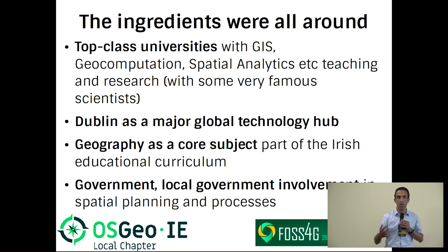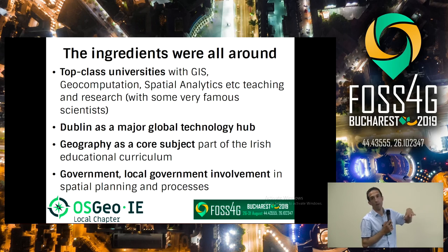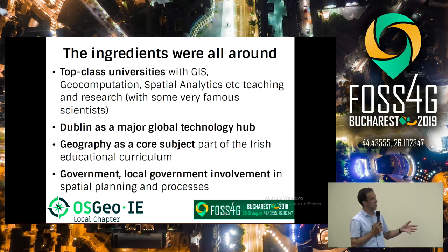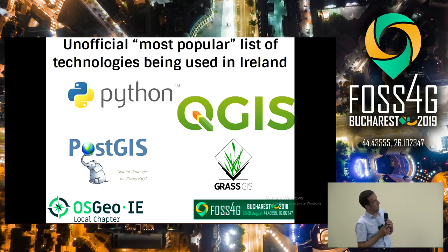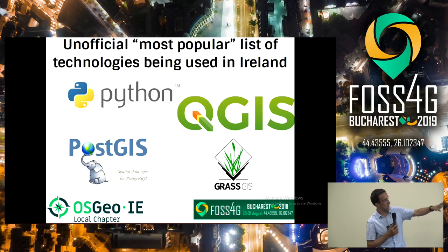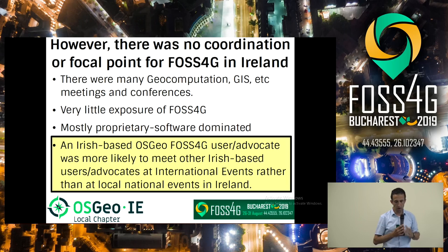The ingredients were all around. We had four major components: top-class universities with huge spatial components in teaching and research; Dublin as a major global technology hub; geography as a very core part of the Irish education system and curriculum; and government at both local and national level deeply involved in spatial planning. We also knew there was an unofficial most-popular-technologies list, with GRASS being very popular amongst the forestry and land use community. But there was no coordination or focal point for the community in Ireland at that time.